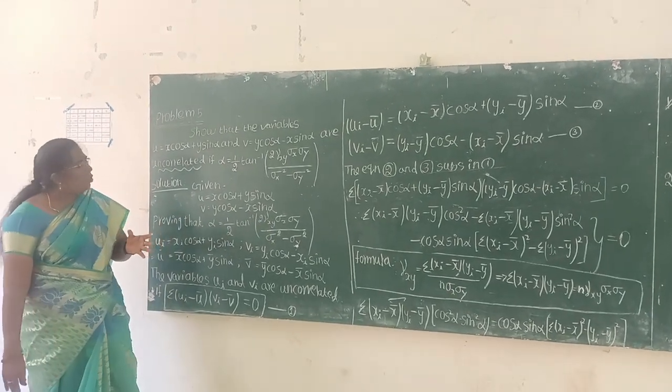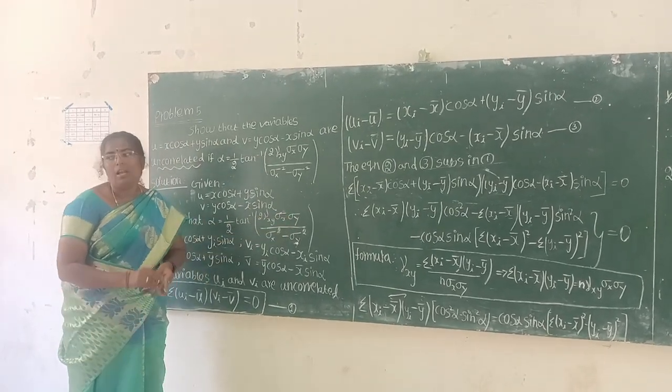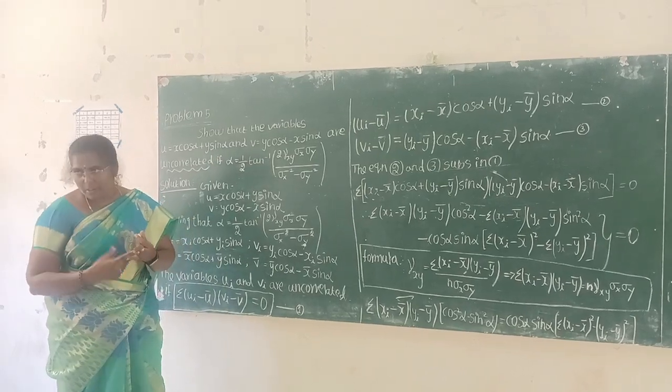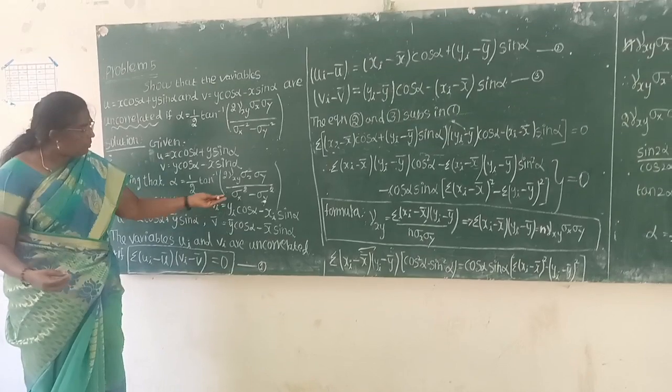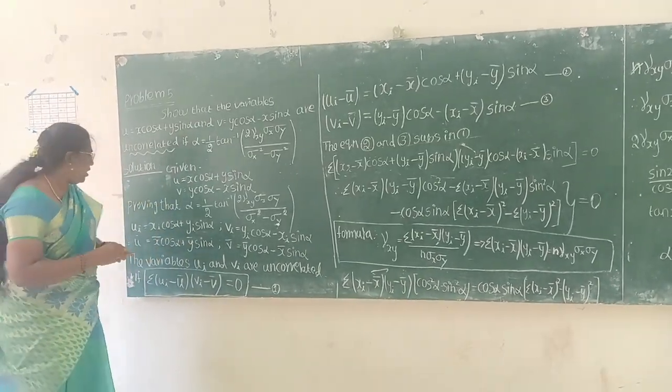If we are doing this, we will find gamma xy, sigma x, and sigma y. Then we will show you the formula. Gamma xy will be the formula. This formula is equal to sigma x squared sigma y.